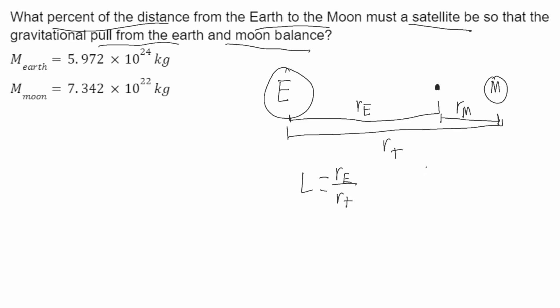I also know that RT, the total distance, is going to be equal to the distance from the Earth to the satellite, RE, plus the distance from the Moon to the satellite, RM.